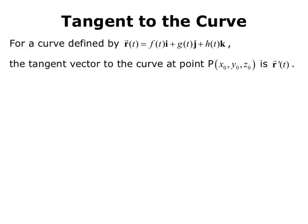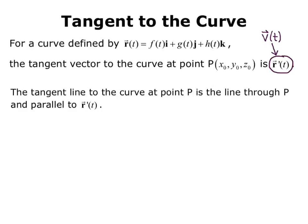So the tangent to the curve, for a curve defined by r of t equals f of t i plus g of t j plus h of t k, the tangent vector to the curve at point P (x₀, y₀, z₀) is r prime t. In other words, the velocity vector is the tangent vector to the curve, v of t. The tangent line to the curve at point P is the line through P and parallel to r prime t.